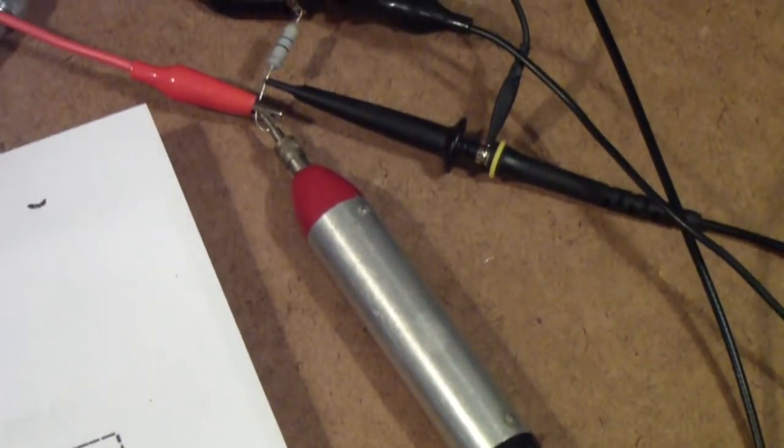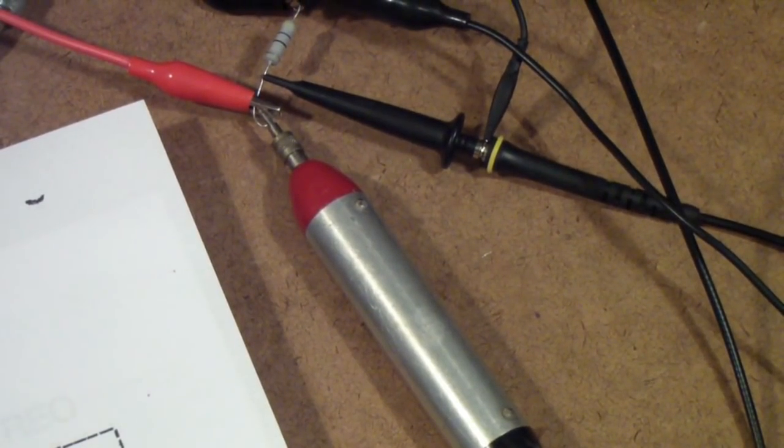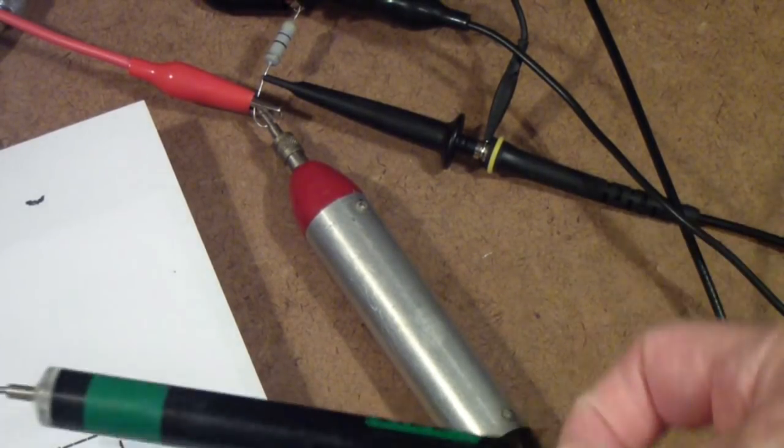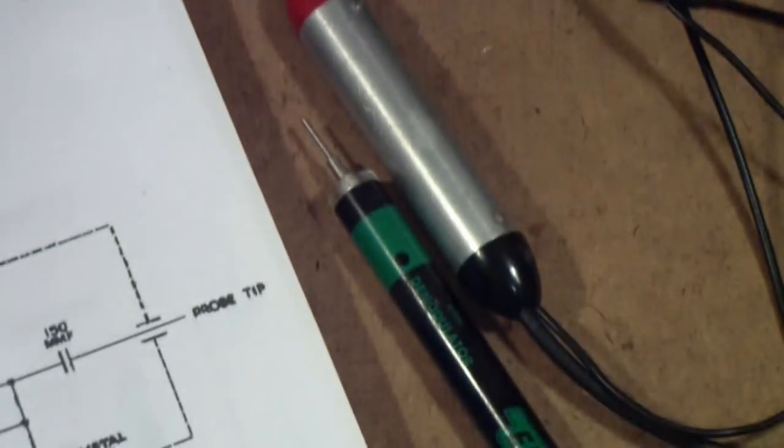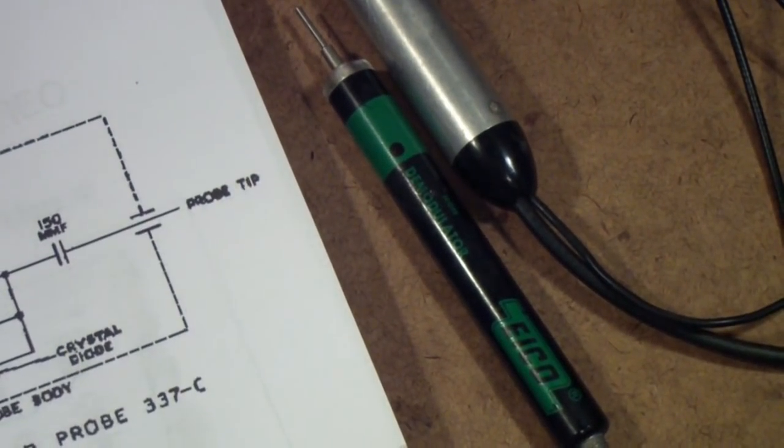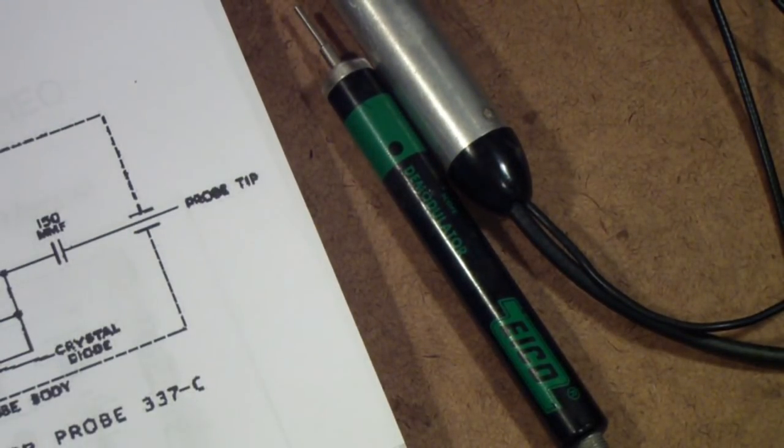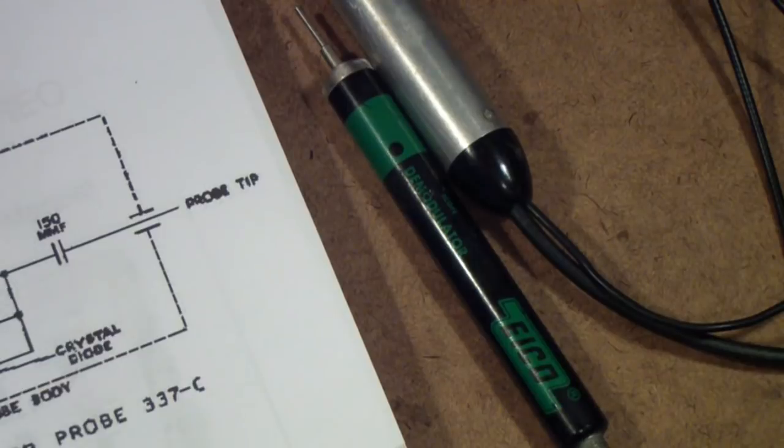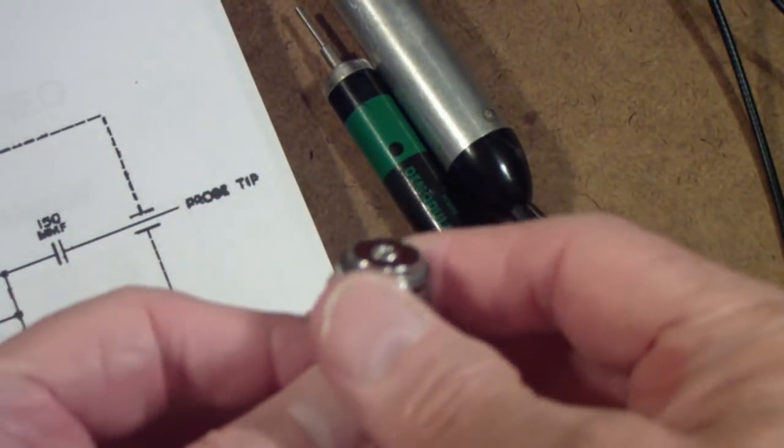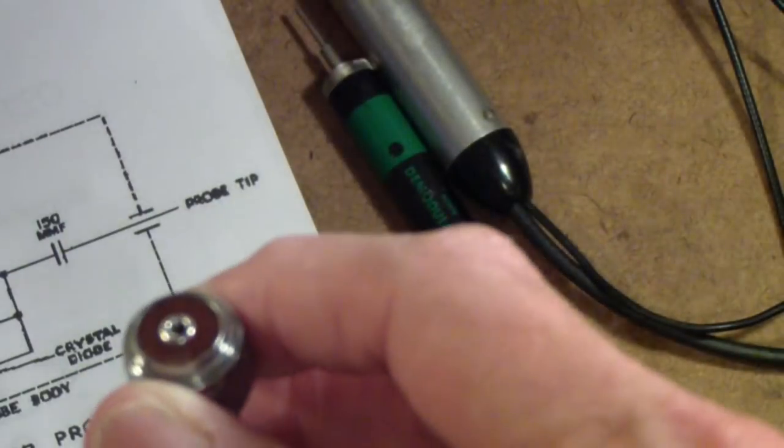Now earlier I also showed this probe, an ICO demodulator probe, that I also had in my stock. I wound up having to change the connector. And I think I'll kind of close this by talking about this, because this is something that, once again, if you didn't work on this equipment back in the day, like dinosaurs like I did, you won't recognize this connector. This is the connector that was on that probe. It now has a BNC connector. This is what was called an Amphenol, and I'll unscrew the barrel a little bit here so you can see this part unscrews. Let me get it to focus a little bit. You notice that there's no center conductor, or at least no pin sticking out.